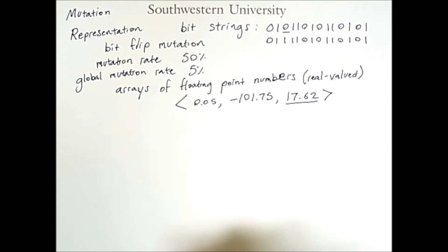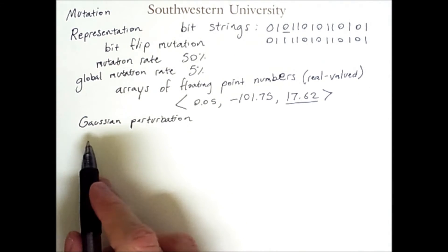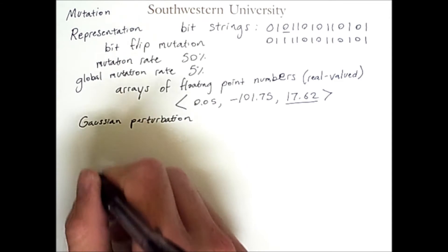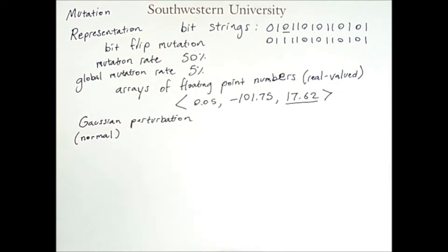If we choose this number, we will typically modify it with something called Gaussian perturbation. A Gaussian probability distribution is also known as a normal distribution. It looks like this. The way to interpret this is the following.